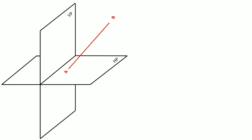We will see how to project this line on both planes. In this case, point A is given 10mm above the horizontal plane and 25mm in front of the vertical plane. The line AB is given at an angle theta with the horizontal plane and angle phi with the vertical plane.